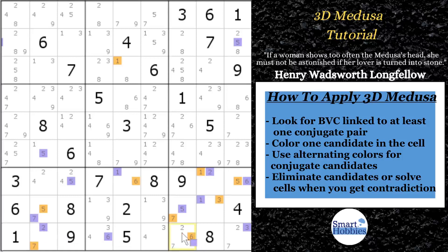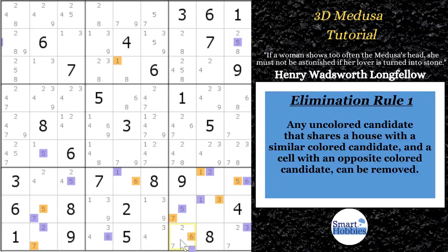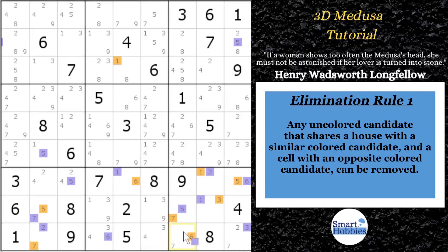This leads us to the first elimination rule: if an uncolored candidate can see a colored candidate in the same house, and there are opposite-colored candidates in its own cell, it can be removed. Either the solution path contains the orange six — so that can't be a two — or it's purple and this two would be a solution, so that also can't be a two. Either way, you can eliminate that two. That's the first elimination rule.